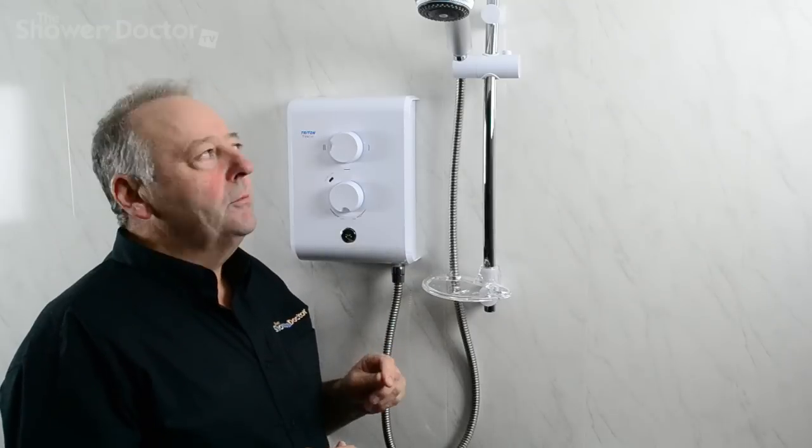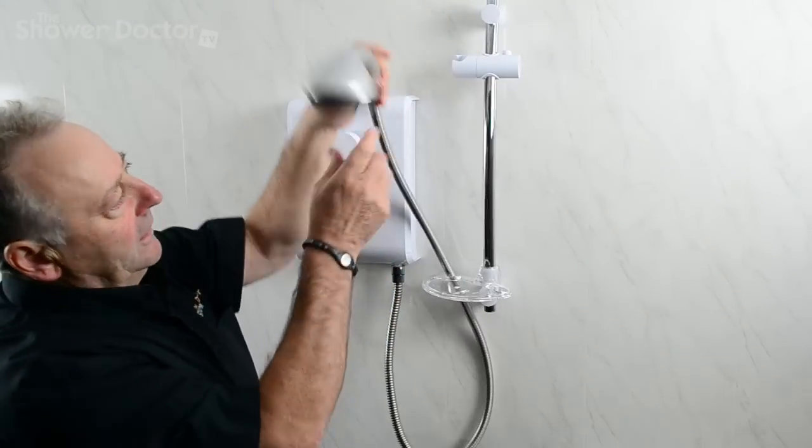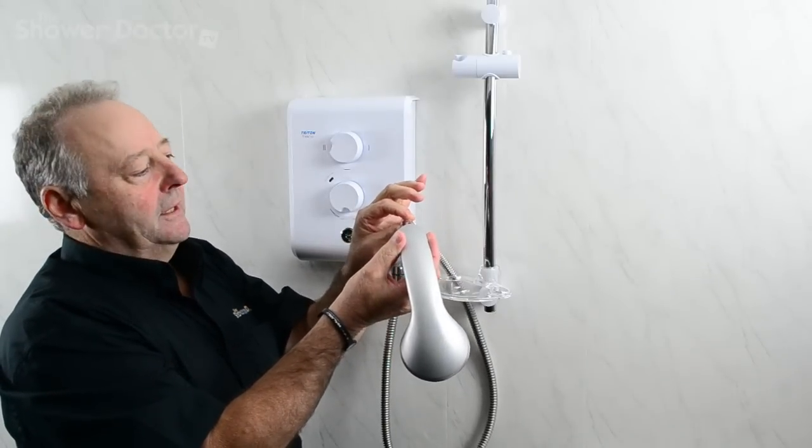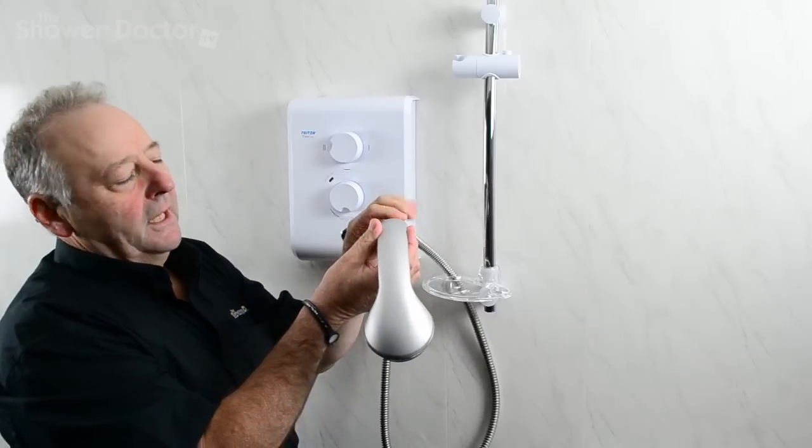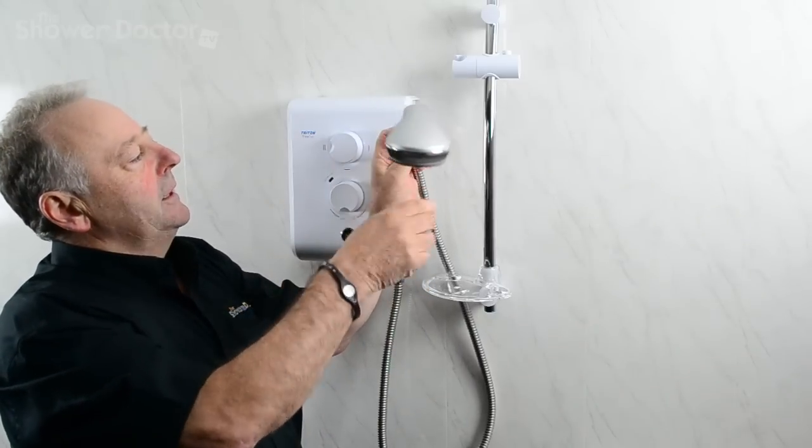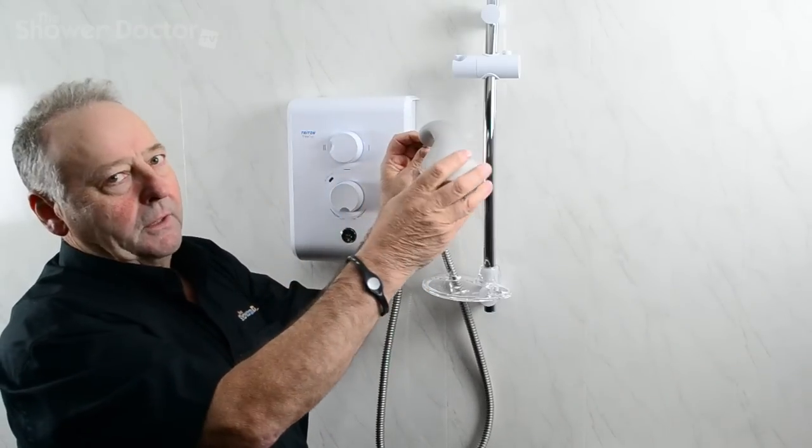The hose normally goes wrong here, where the hose joins the shower head. It often breaks here. If you're using the head to wash your hair, then this is the point that usually becomes faulty.